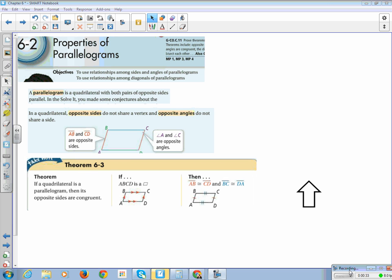So, AB and CD are opposite sides. These red sides here are opposites. And angle A and angle C, they're catty-cornered to each other, are opposite angles.